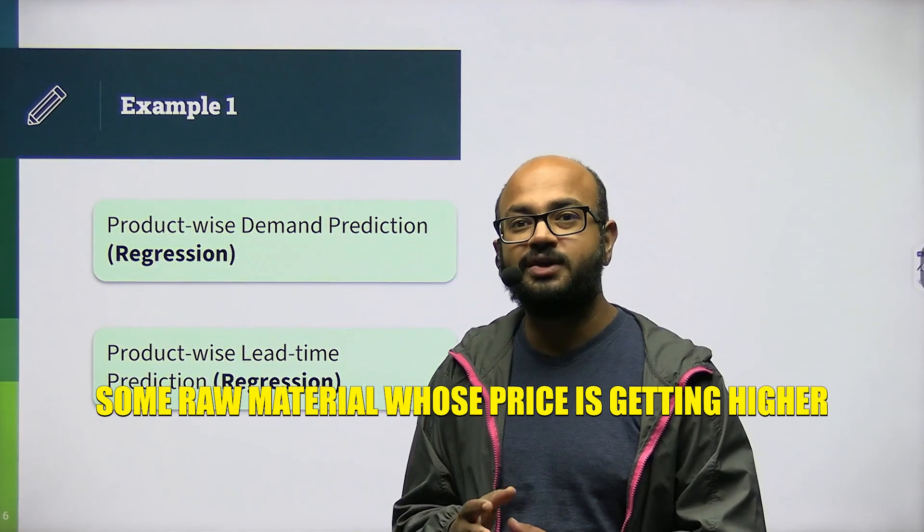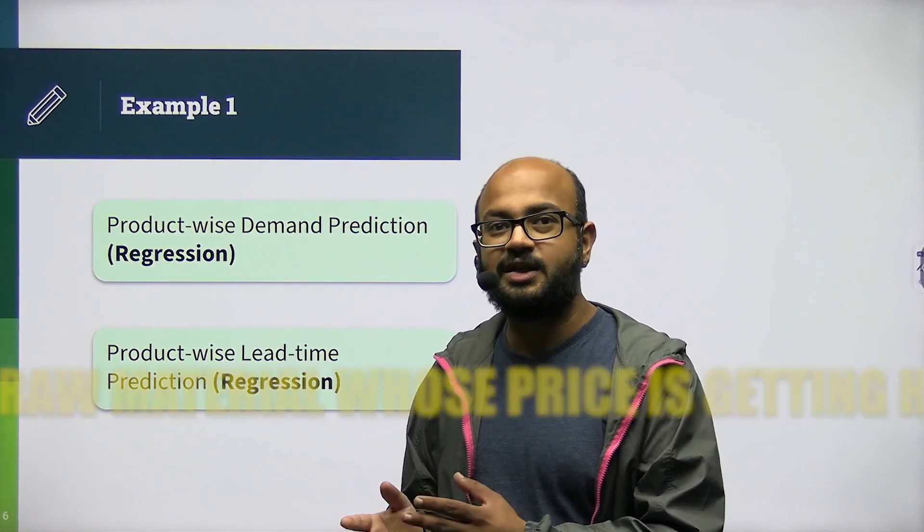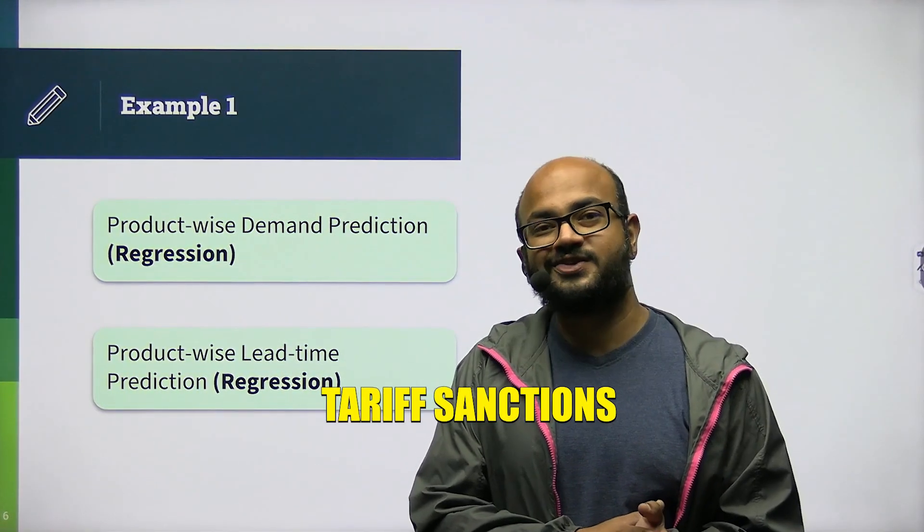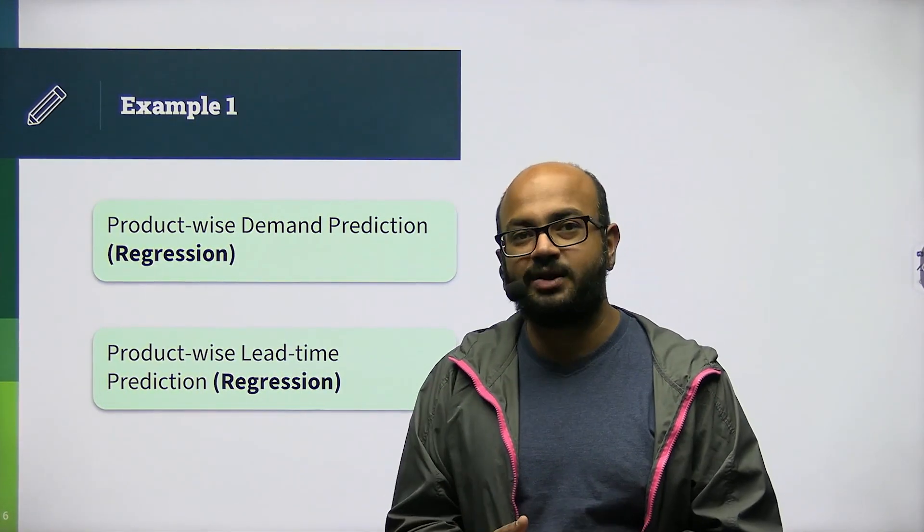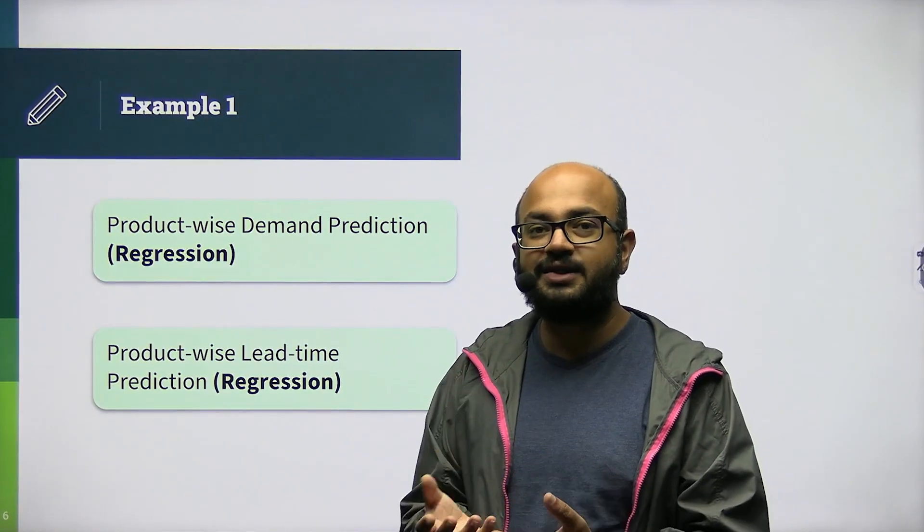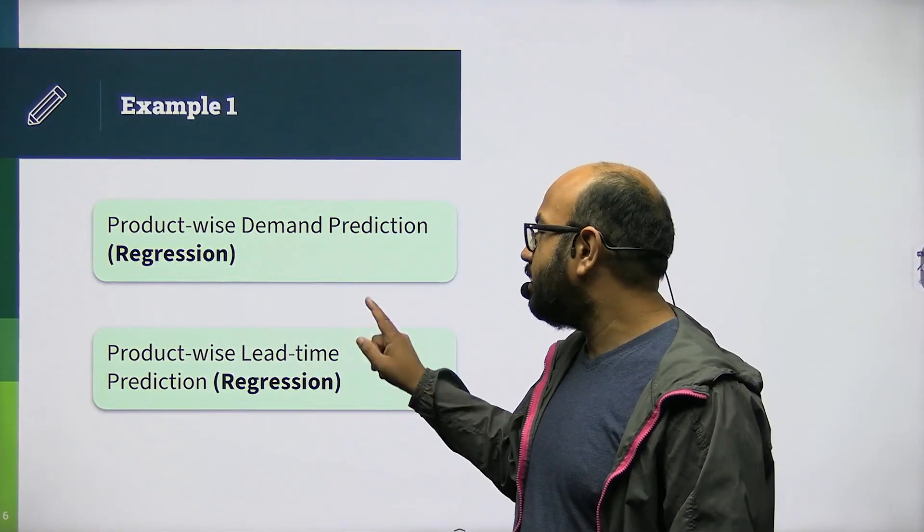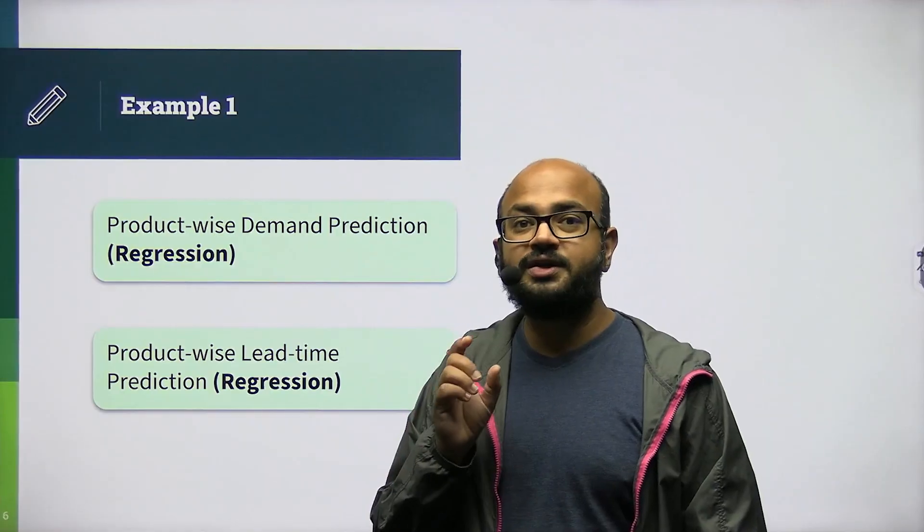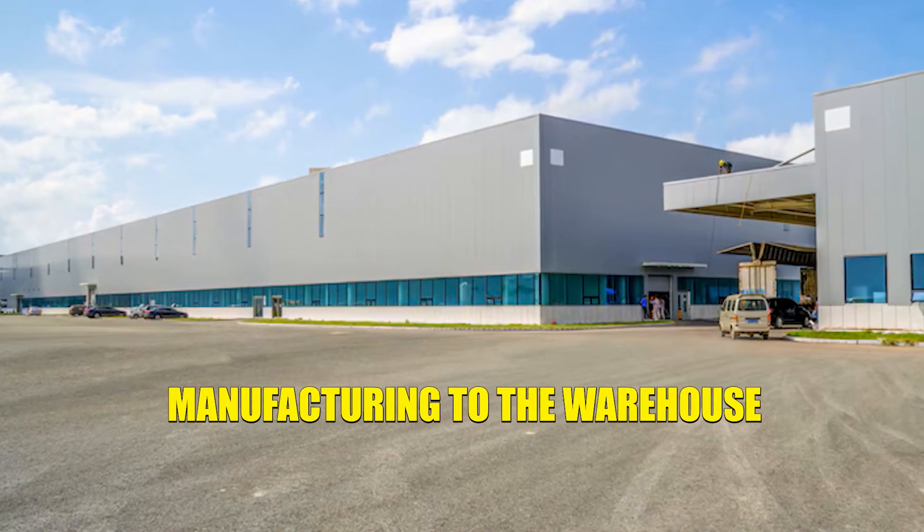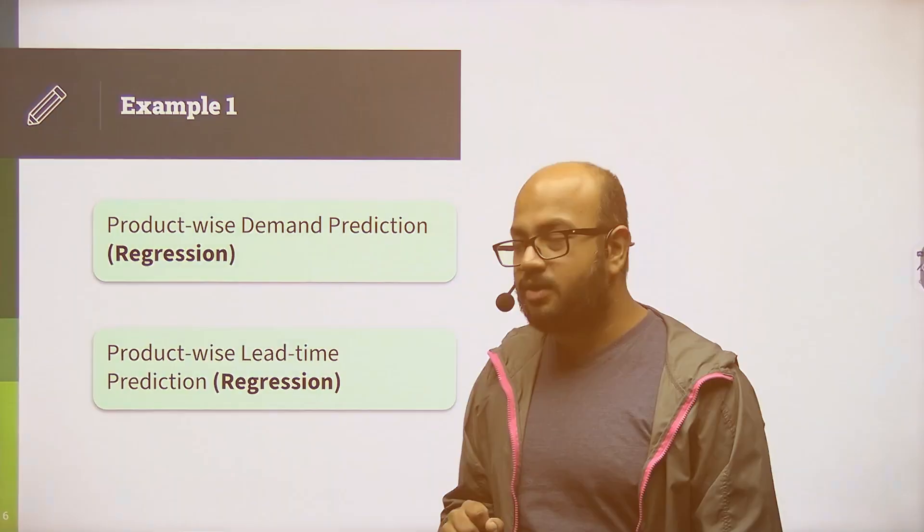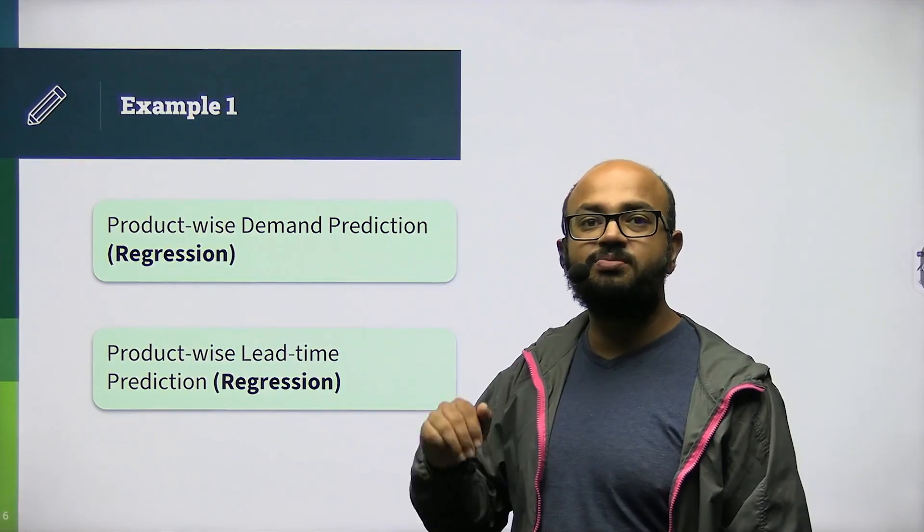There must be some raw material whose price is getting high. There must be some tariff sanctions or something that can happen. I'll have to take that as input and identify a lead time, or the time from manufacturing to the warehouse. Okay? Both these problems are regression-based problem statements.